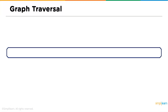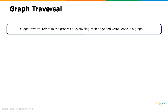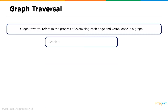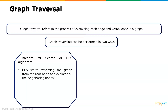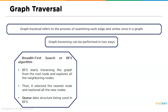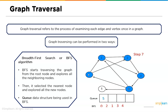Now we have graph traversal. Graph traversal refers to the process of examining each edge and vertex in a graph. Graph traversal can be performed in two ways. The first is breadth-first search, or BFS algorithm. BFS starts traversing the graph from the root node and explores all the neighboring nodes, then selects the nearest node and explores all new nodes. A queue data structure is used in the BFS algorithm — it chooses the nearest node first, then traverses to all other nodes.